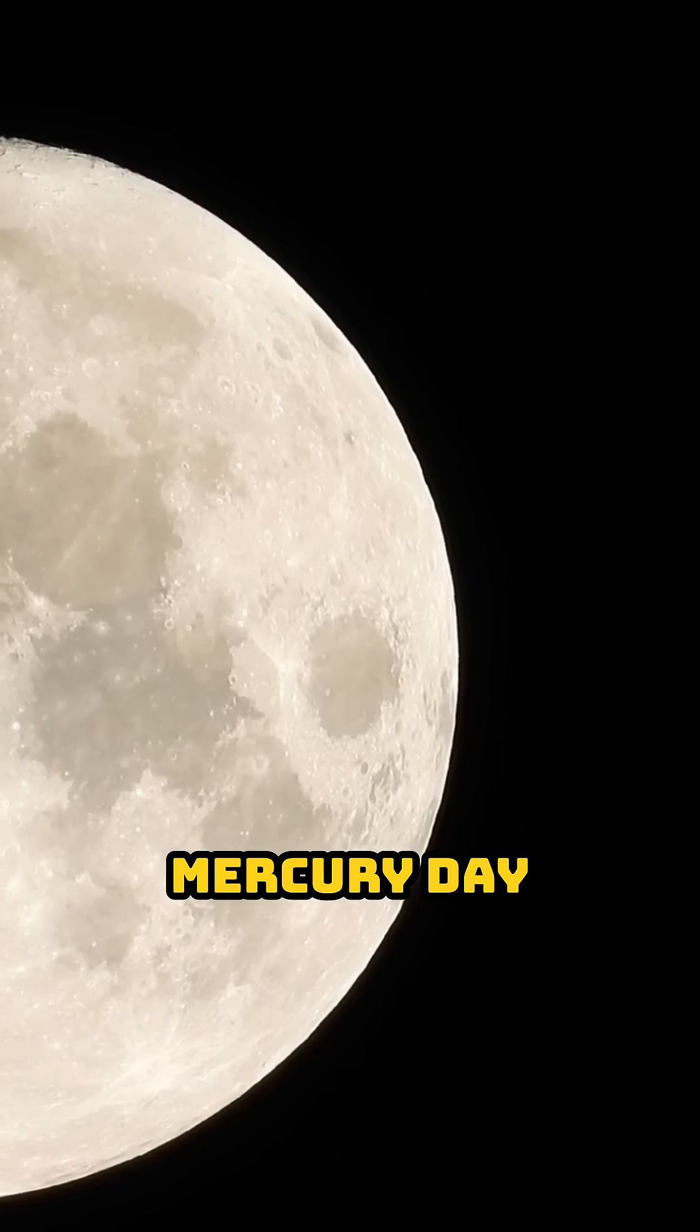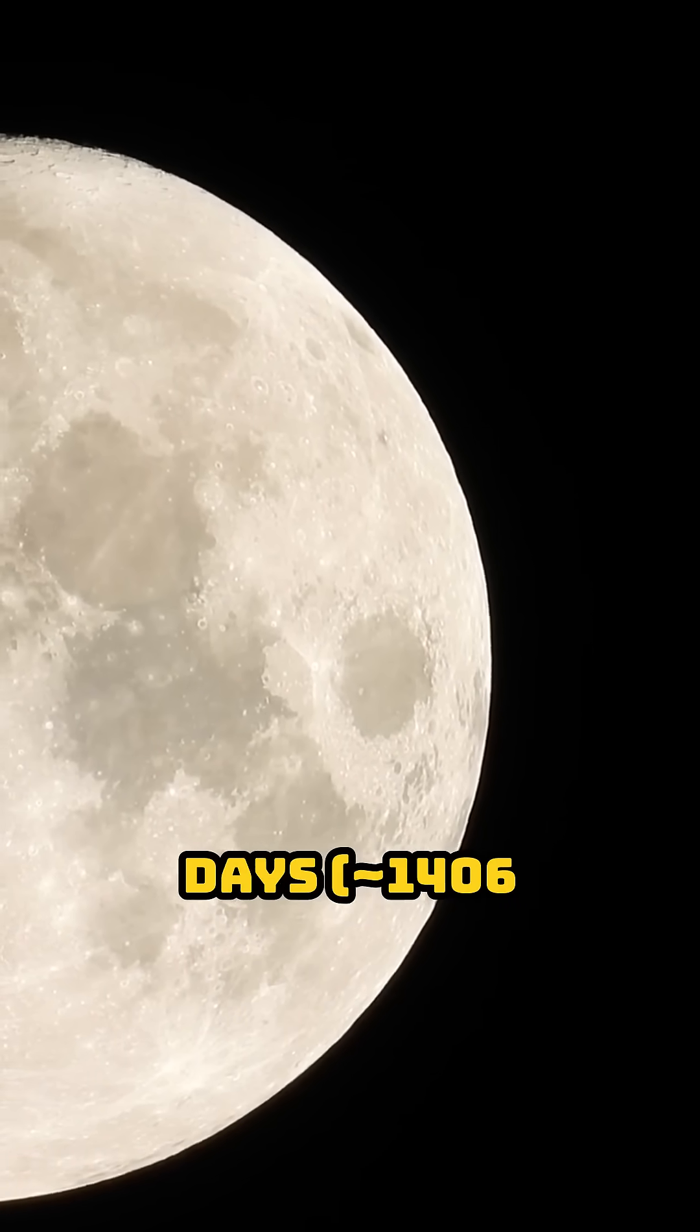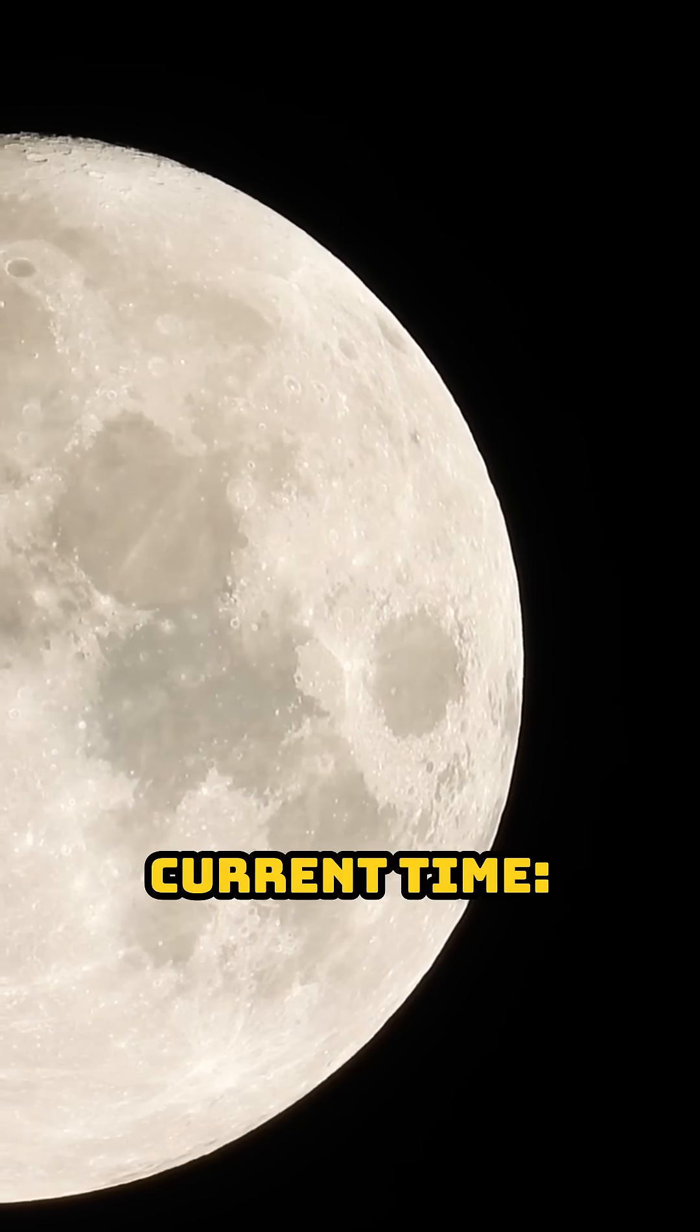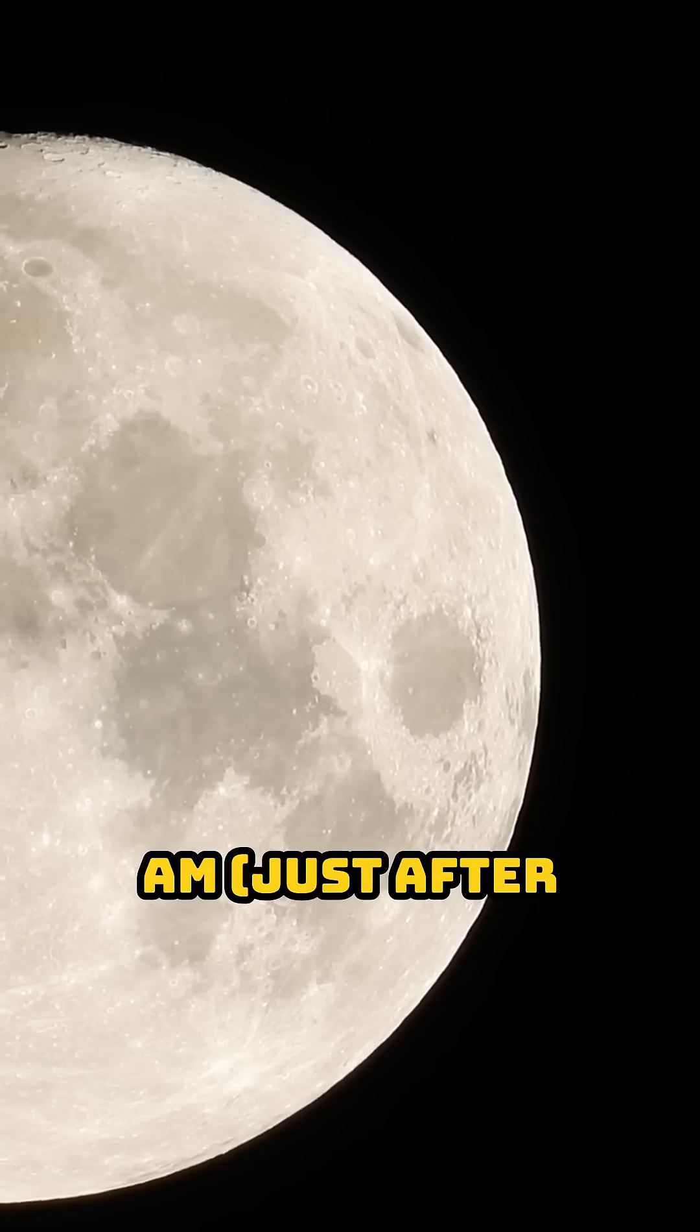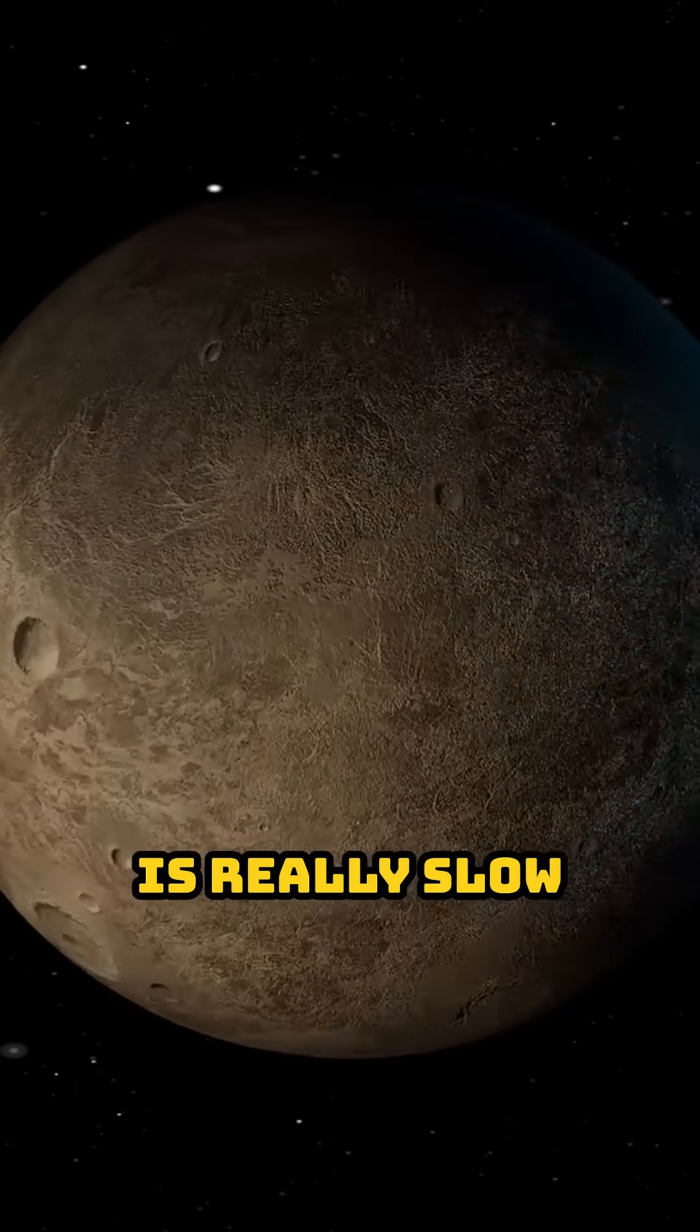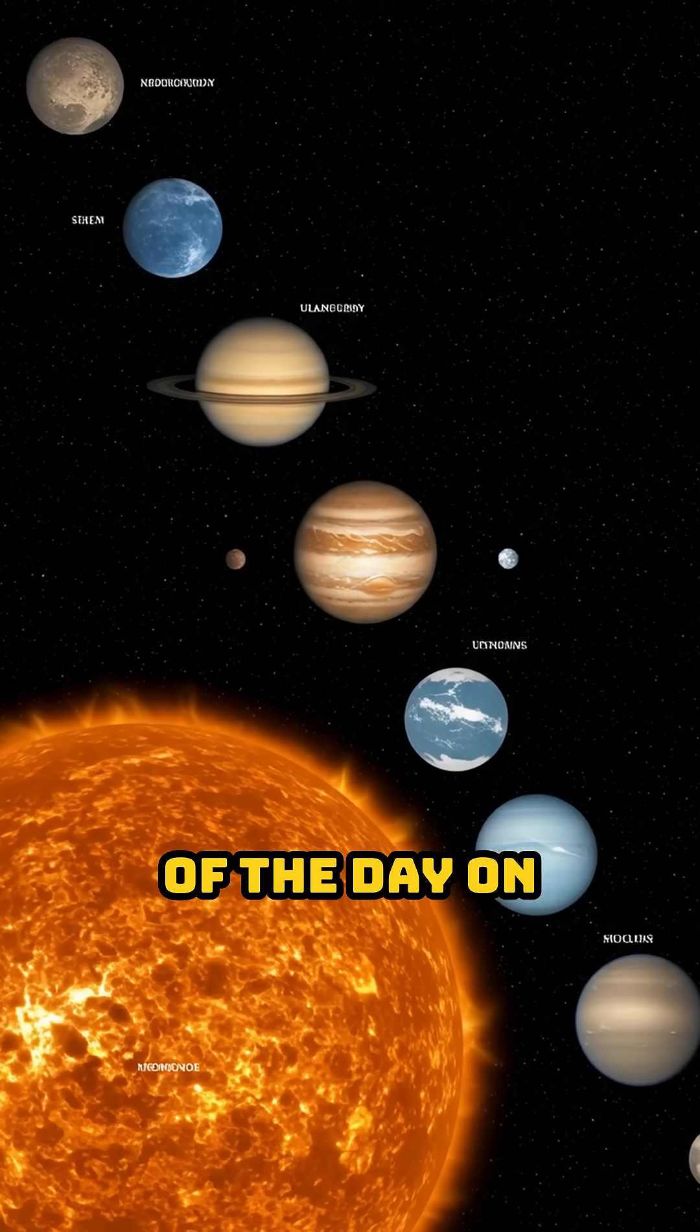Number 2: Mercury. Day length 5832 Earth hours, current time 12:08 AM, just after midnight. A full day on Mercury is really slow. If it's noon on Earth, you're still at the very start of the day on Mercury.